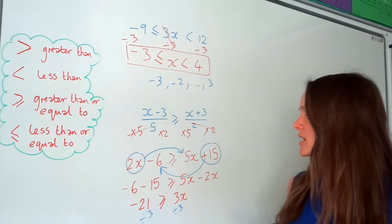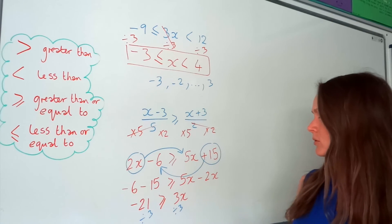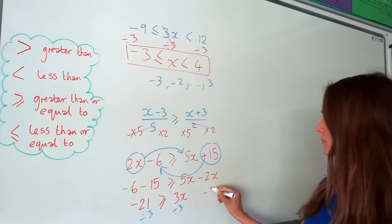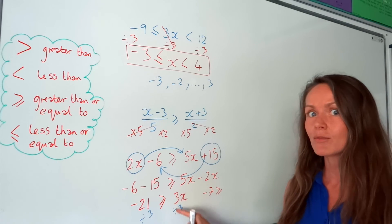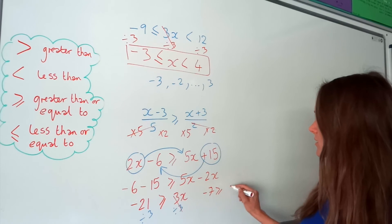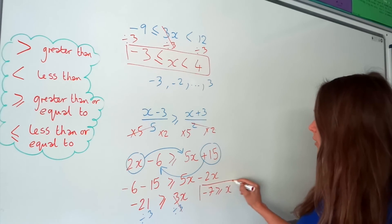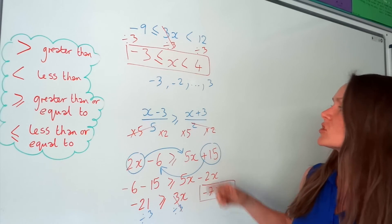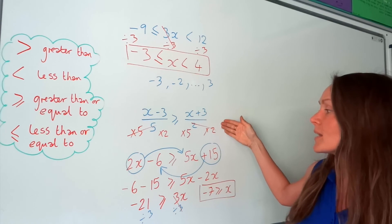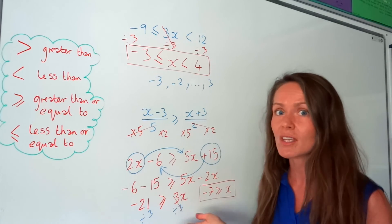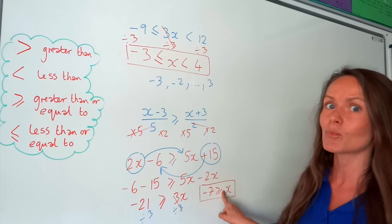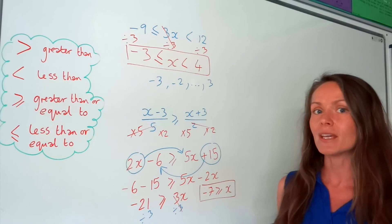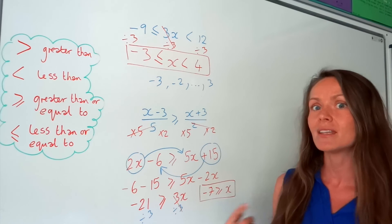Move the smaller 2x to the right, and numbers to the left. The negative 6 stays; the positive 15 changes to negative 15. The positive 2x changes to negative 2x. So minus 6 take away 15 is negative 21, and on the right-hand side I've got 3x. Dividing everything by 3, on the left-hand side I've got negative 7, and 3x divided by 3 is just x. So x is less than or equal to minus 7 — x could be negative 7, negative 8, negative 9, and all smaller values.